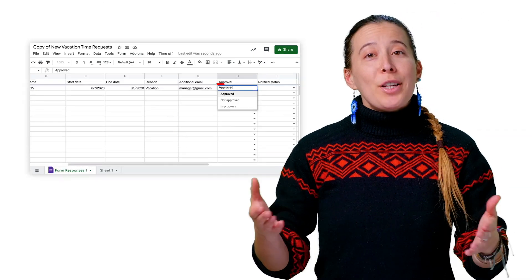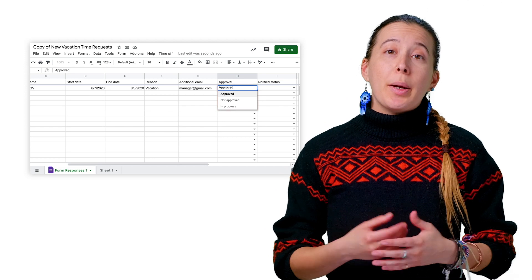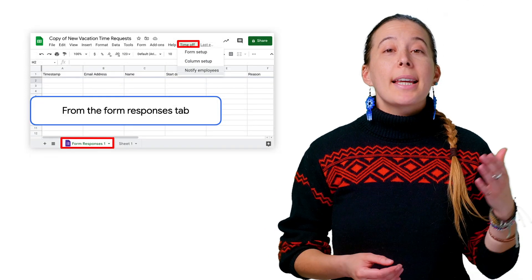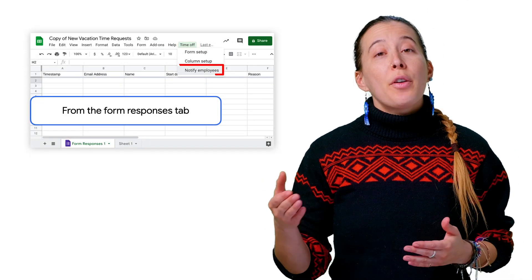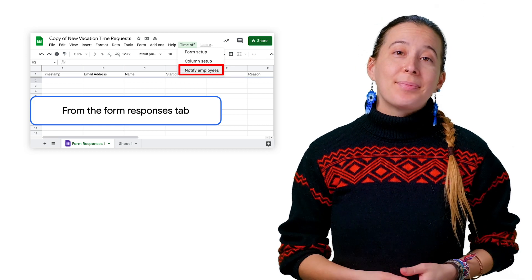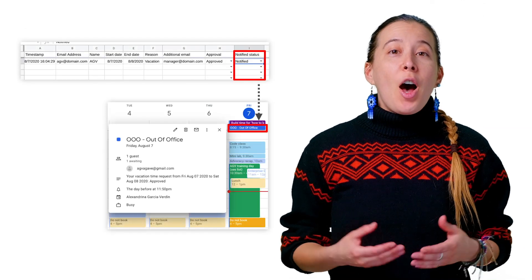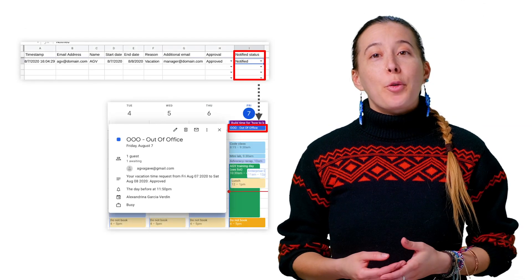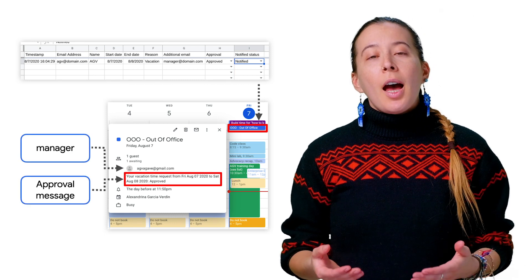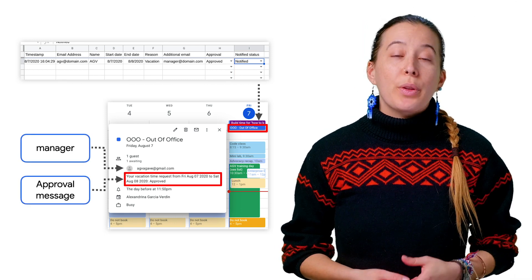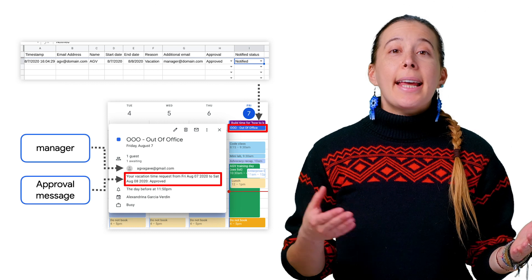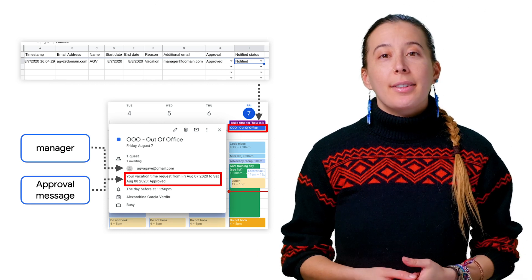Next, once you've approved or not approved your employee's request, click on Time Off and then Notify Employees, which does just that. Also note that for users that did get their request approved, a Google Calendar event with the corresponding start and end time is also created.